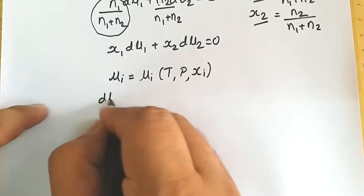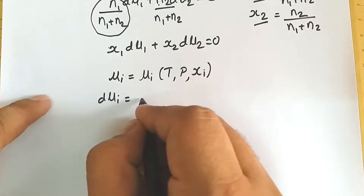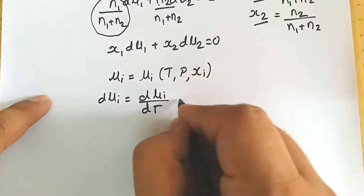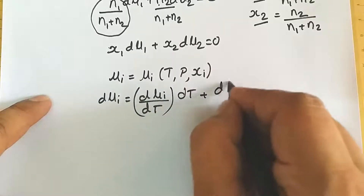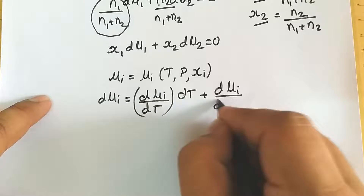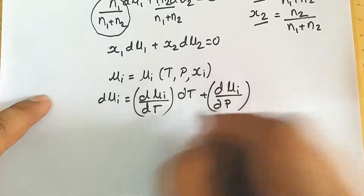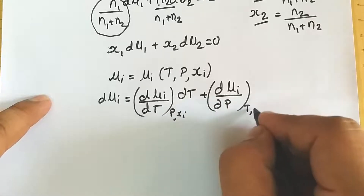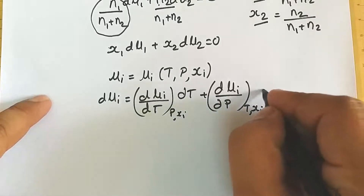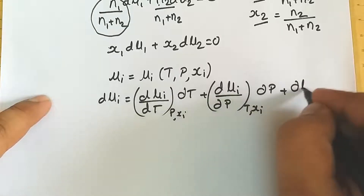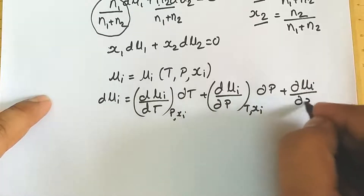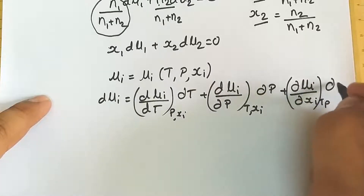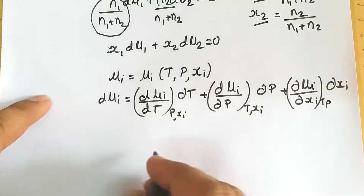So we can write the change in chemical potential as: dμ1 equals (∂μ1/∂T) at constant P and x times dT, plus (∂μ1/∂P) at constant T and x times dP, plus (∂μ1/∂xi) at constant T and P times dxi.